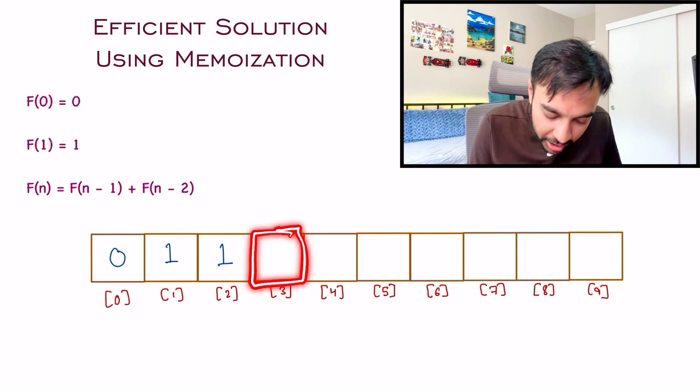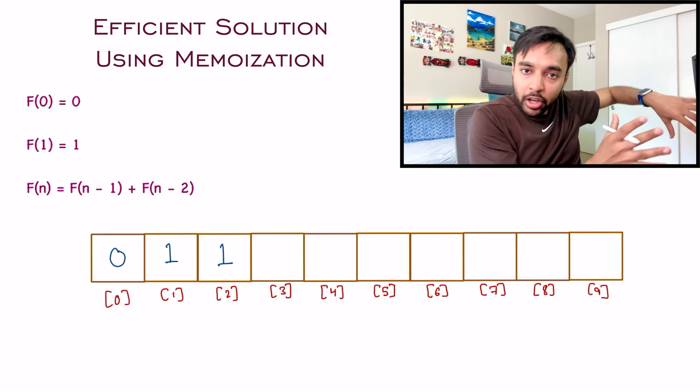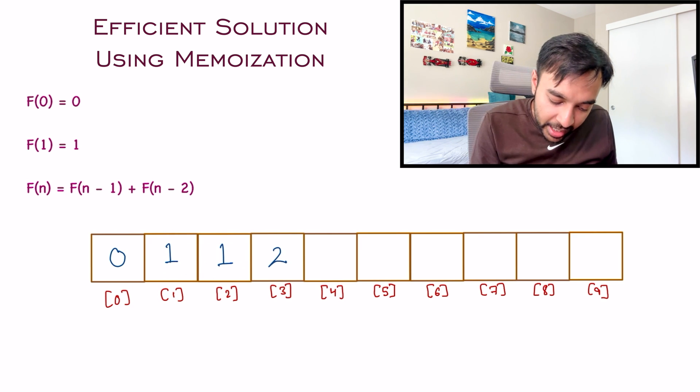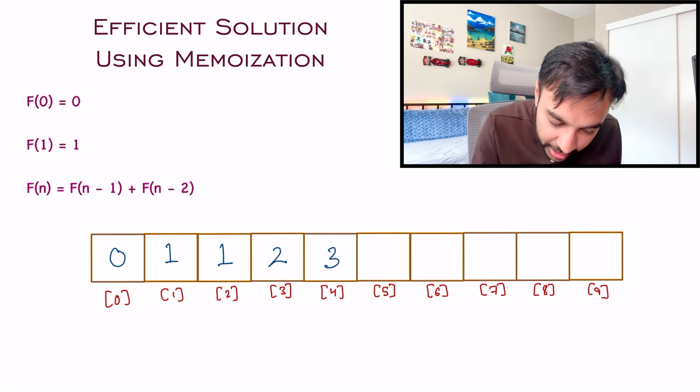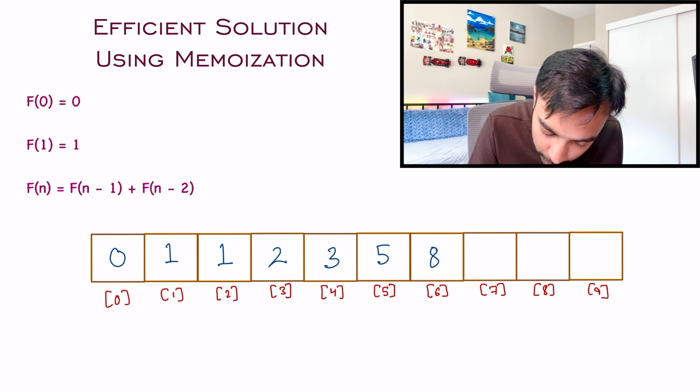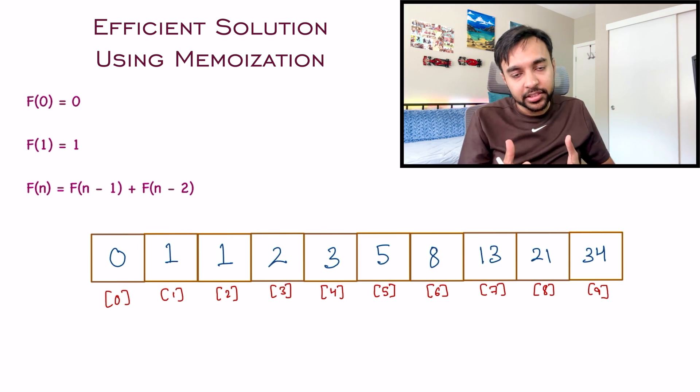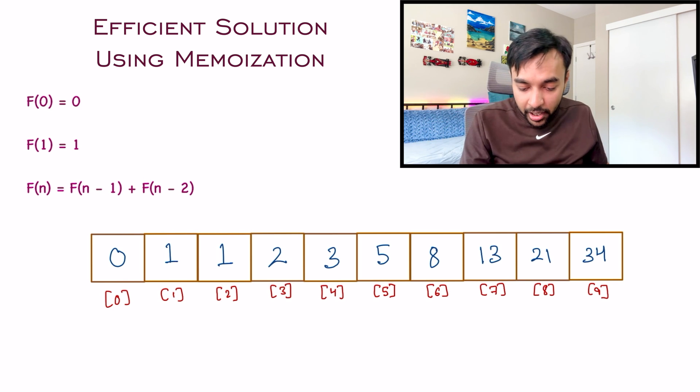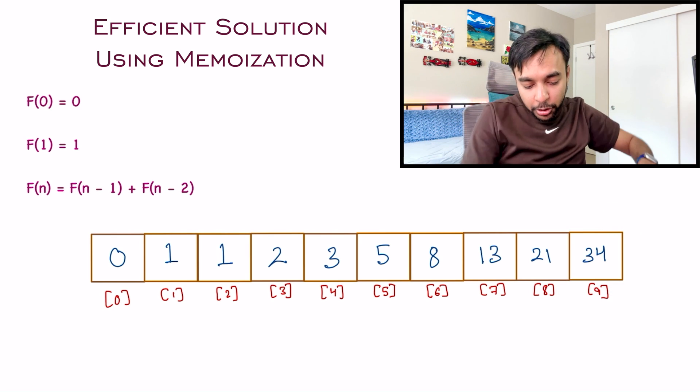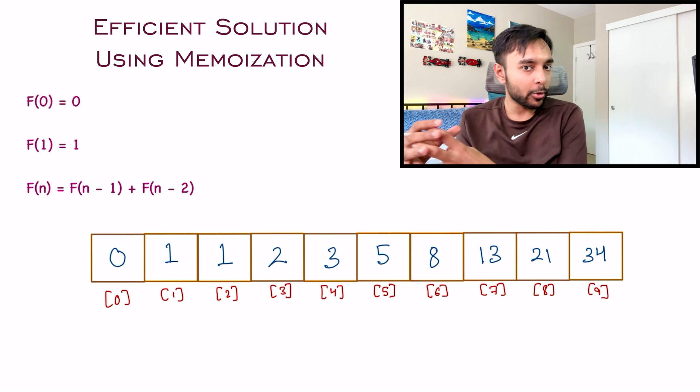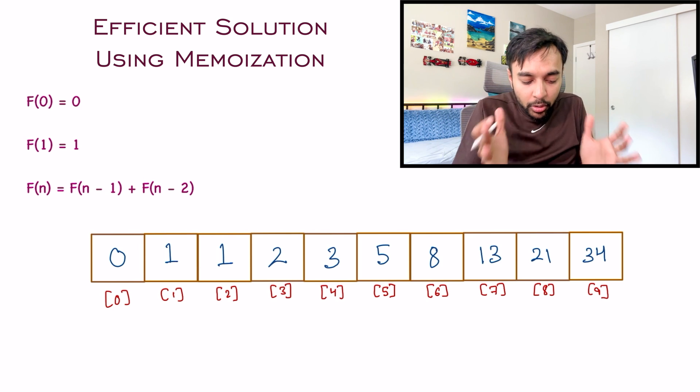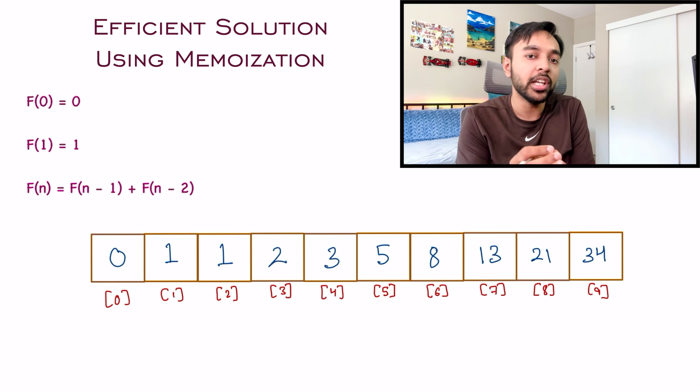To calculate the next value, I have F(n-1) plus F(n-2). Instead of calculating both values, I look up the values in the array - 0 and 1 - add them and get my next value, 1. Similarly moving ahead, to calculate F(3), you don't have to recalculate previous results - just add the previous two values and get 2. Moving ahead, add the previous two and get 3, then 5. You continue to populate this array. So if someone asks what's the value when n equals 9, you get 34 directly.